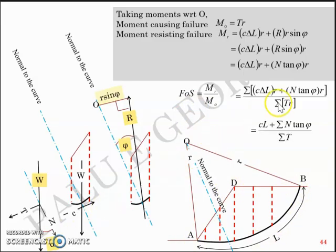And the final expression cancelling out R which is common in numerator and denominator is C L plus sigma N tan phi by sigma T which is expression for the factor of safety in case of C phi soils using the Swedish circle method.